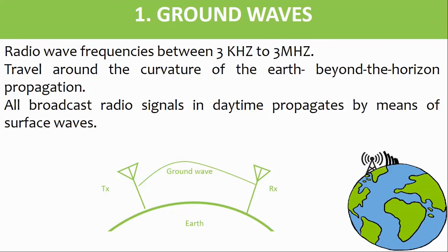The frequency used for ground wave propagation lies between 3 kilohertz to 3 megahertz. Ground waves, also called surface waves, involve signals propagating along the surface of the earth. Interaction between the lower part of the transmitted wave front and the earth's surface causes the wave to tilt forward.